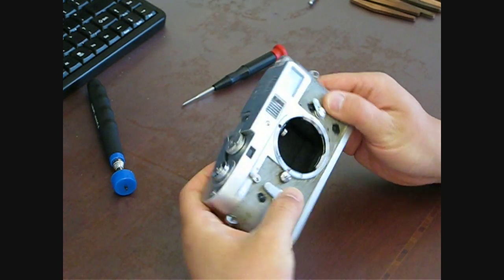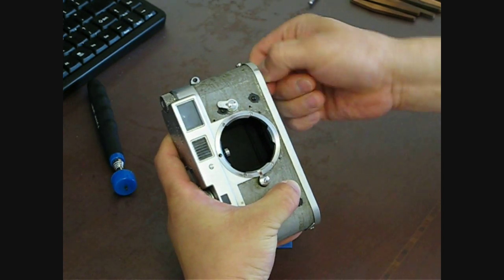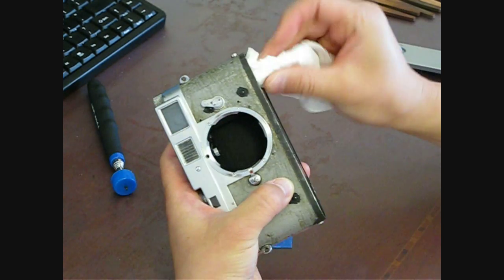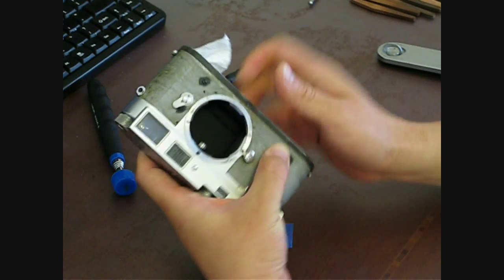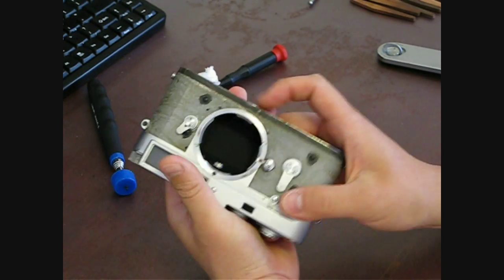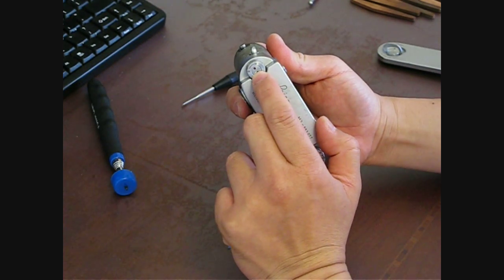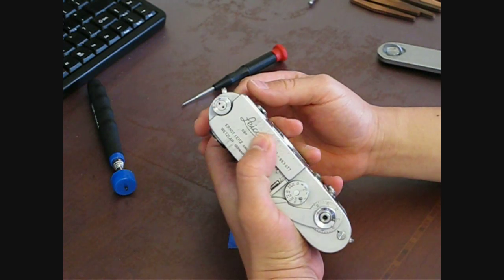Next we're going to go ahead and remove the base plate. I like to use this paper towel trick. I'm going to put a paper towel in there because I need to hold it in place. I'm going to remove that little spanner screw up on the top, which holds the rewind in place.